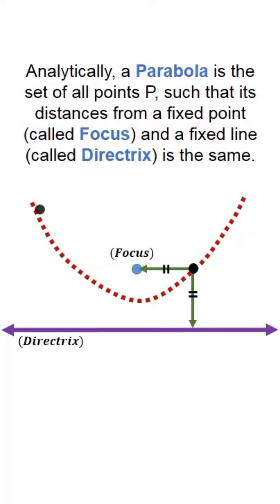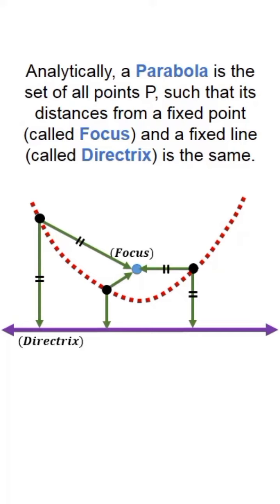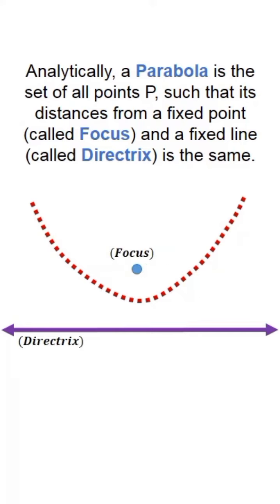Suppose another point is located here. Its distance to the focus and its distance to the directrix is also equal. And if another point is located here, its distance to the focus and its distance to the directrix is also equal. All those points having the same characteristic with respect to the focus and directrix form the parabola.